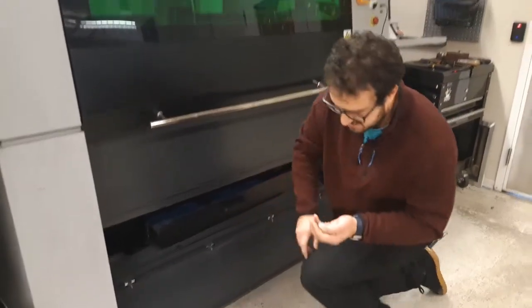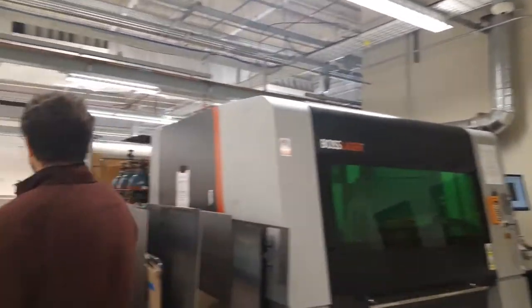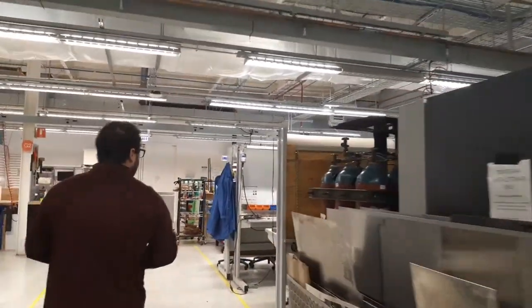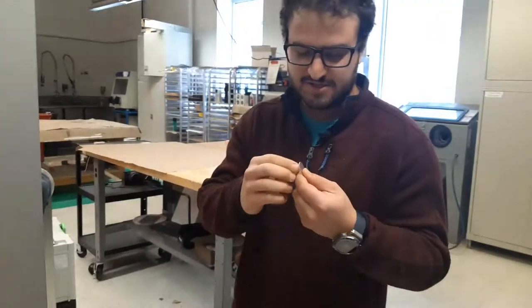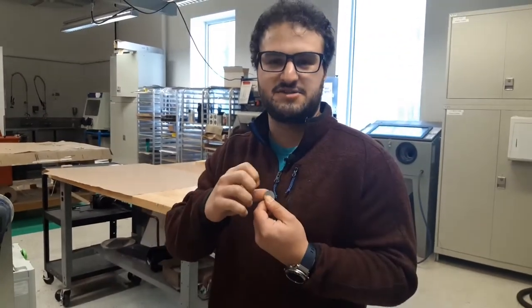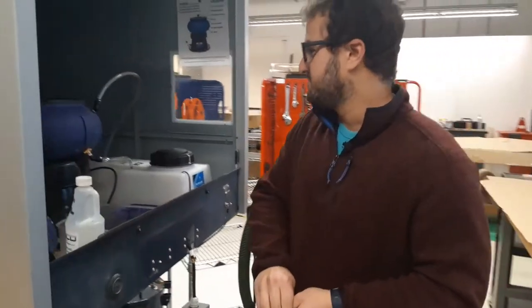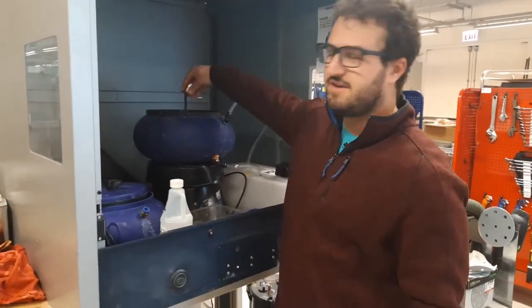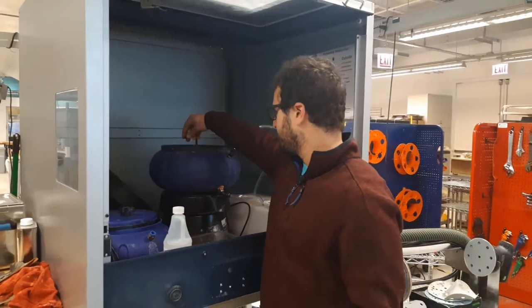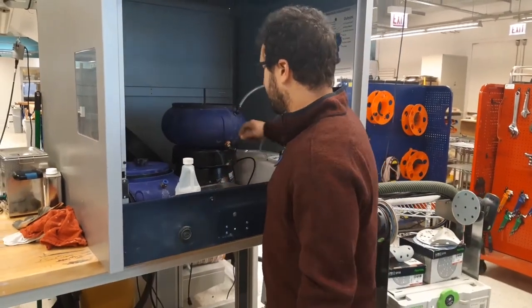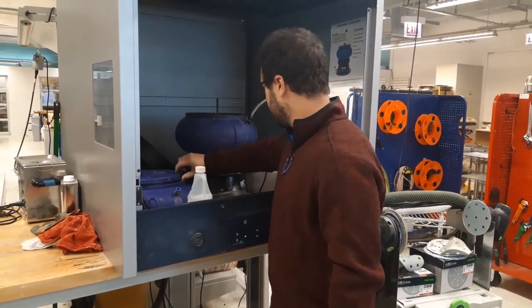Now we're going to take these guys over to our tumbler which is just around the corner here. What we're basically doing is we're going to tumble them to get that little sharp edge off because we don't want anyone cutting themselves on them. We're going to throw them into this bucket full of little ceramic particles and then go ahead and put our lid on here.